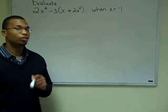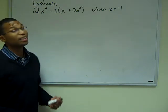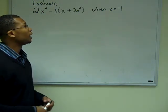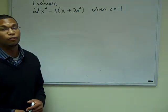So without further ado, let's go to the board. In our first example, we are going to evaluate 2x squared minus 3 times the quantity of x plus 2x squared, where x is equal to negative 1.